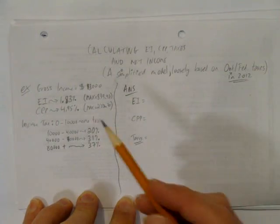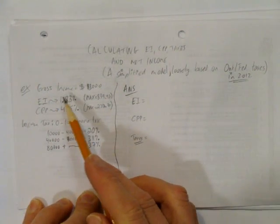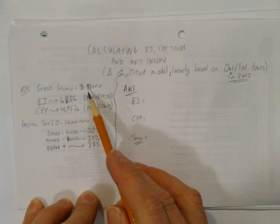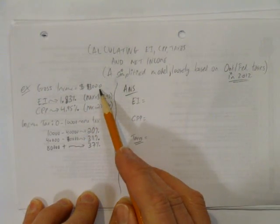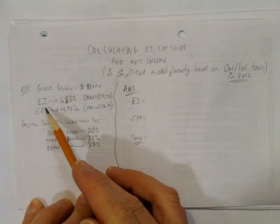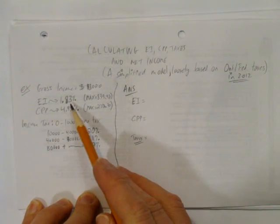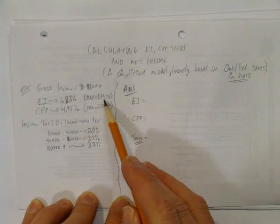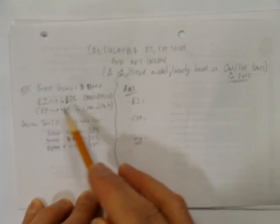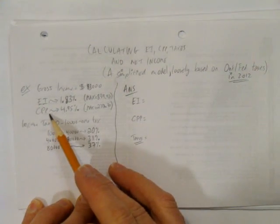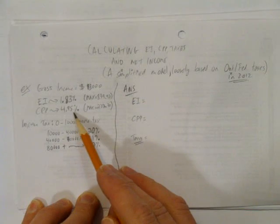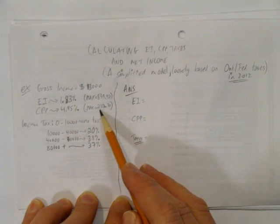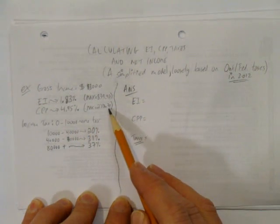So suppose someone had a gross income, that's how much they're paid by their employer, of $83,000 a year. During this tax year, the employment insurance charges 1.83% to a maximum of $839.97 and a Canadian pension plan contribution of 4.95% to a maximum of $2,306.70.